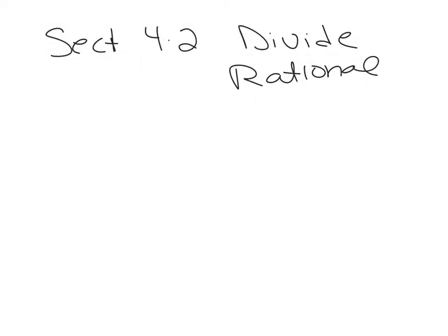We're working in intermediate algebra, section 4.2. We're going to do division of rational expressions. This starts on page 147 in your book.